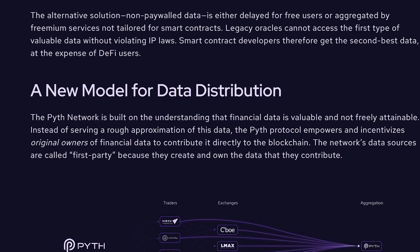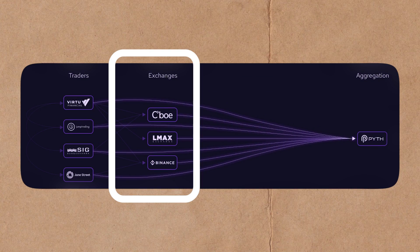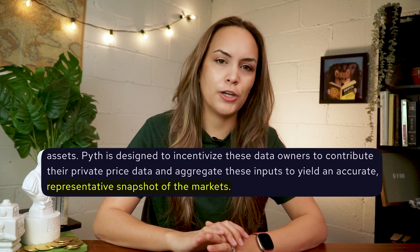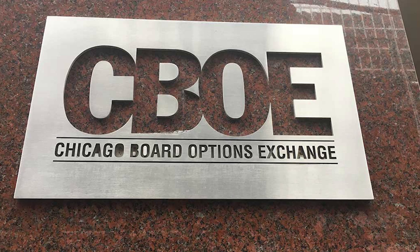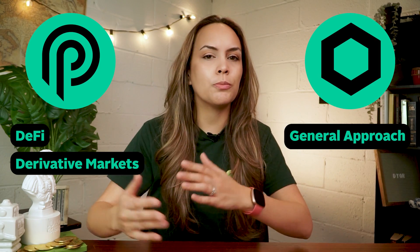Rather than sheer speed, Pyth puts more emphasis on data security. A notable distinction of Pyth is its data distribution model — instead of sourcing price data from third-party aggregators, Pyth sources first-party data directly from exchanges, trading firms, and financial institutions. Pyth states that aggregating first-party data creates more accurate snapshots of market prices. Notable data sources include CBOE, Jane Street, Wintermute, Finance, and OKX. As a result, Pyth Network is tailored specifically for DeFi and derivative markets.